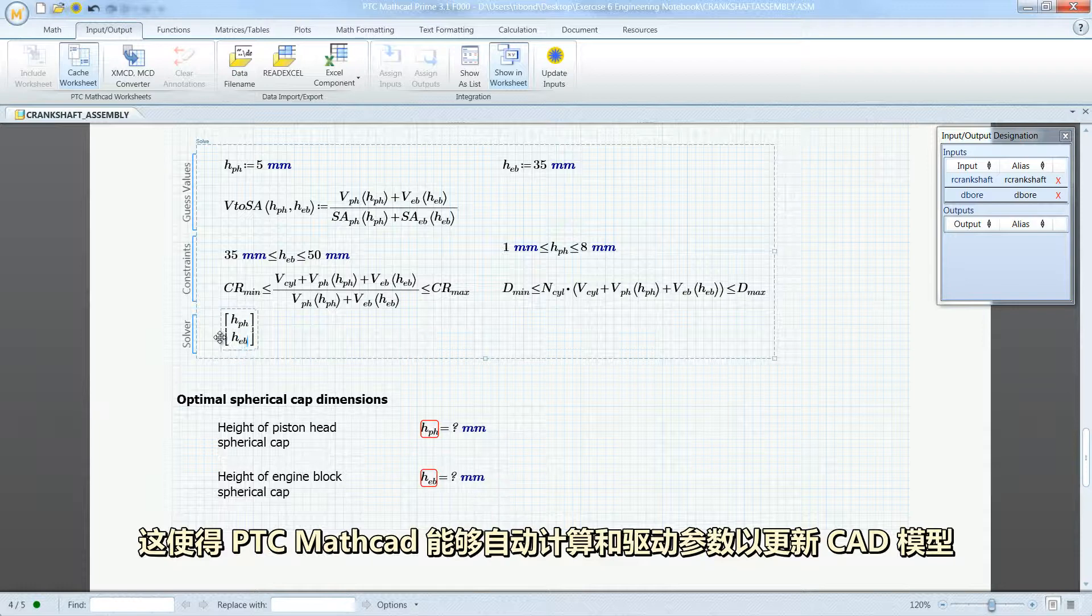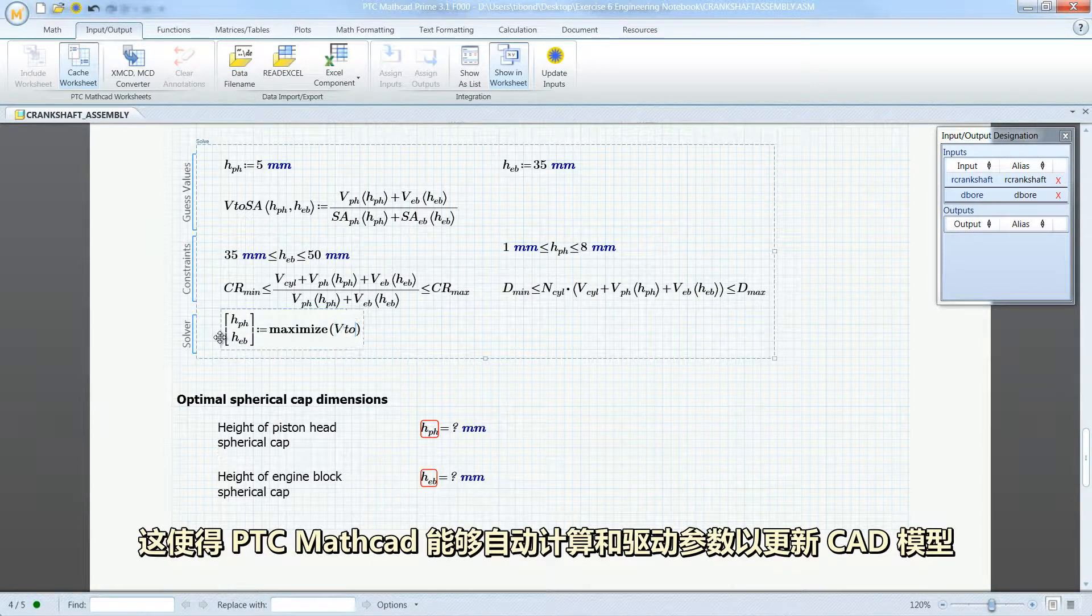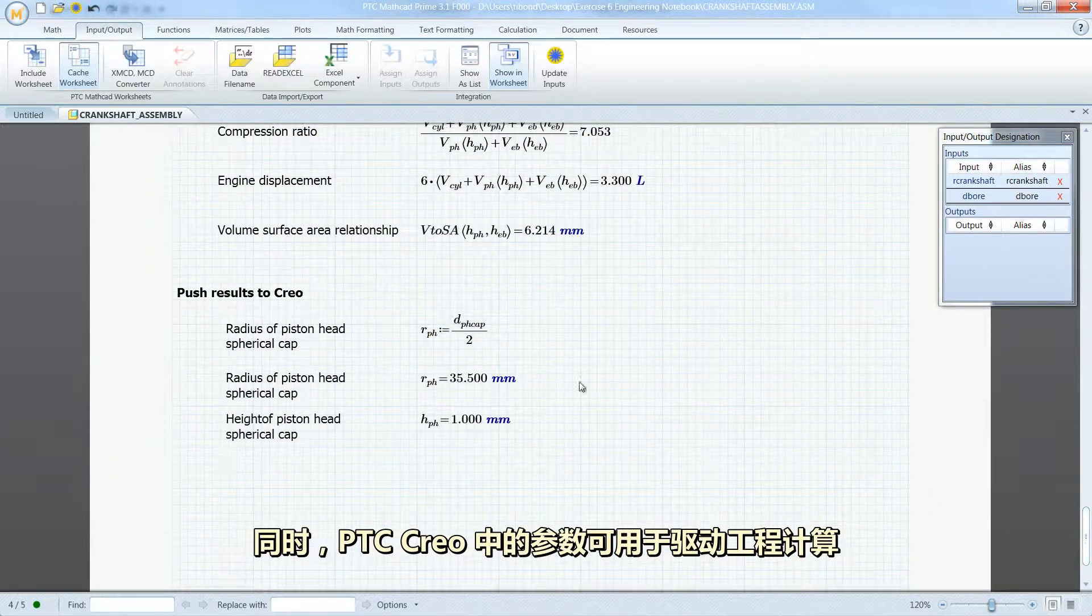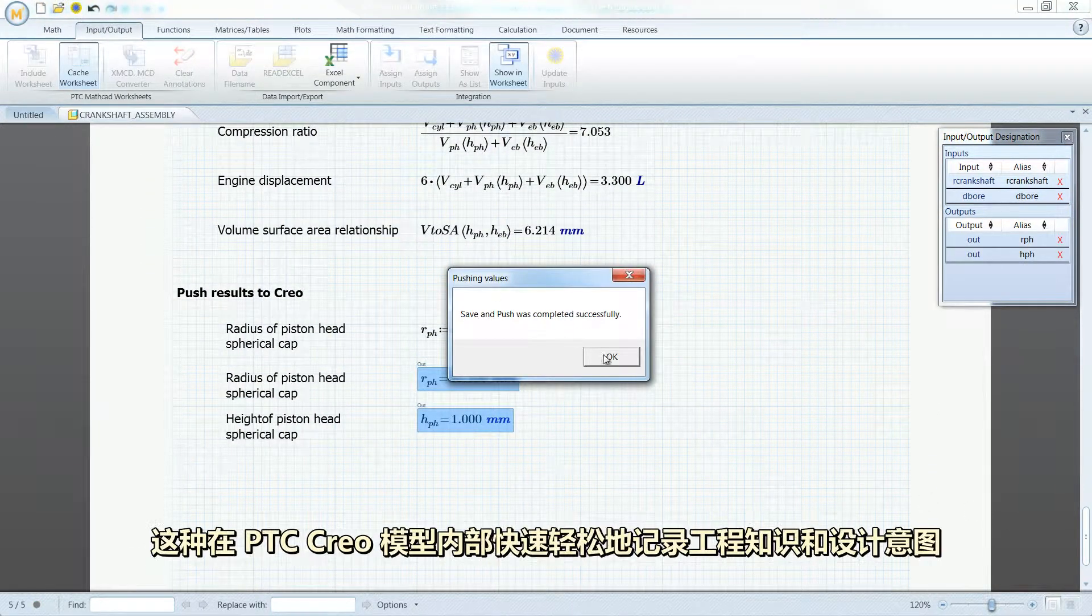This allows PTC MathCAD to automatically calculate and drive parameters to update the CAD model. At the same time, parameters from PTC Creo can be used to drive engineering calculations.